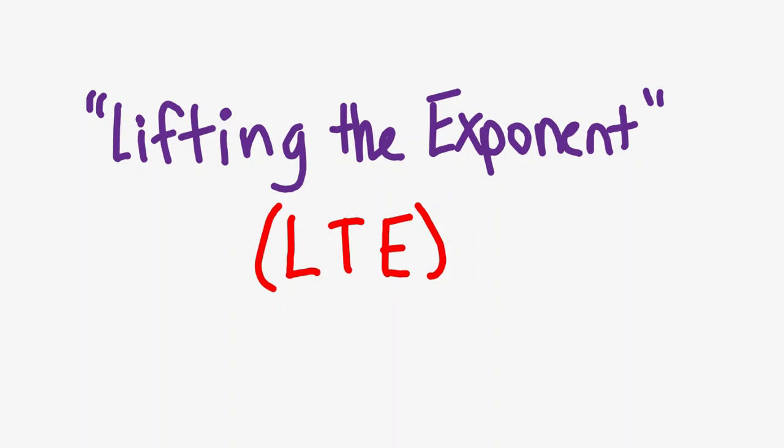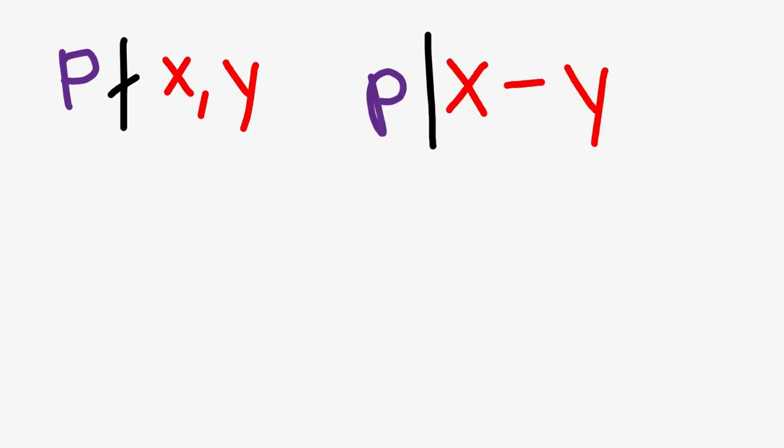At its basis, LTE is something like this. For any odd prime p, choose any two integers x and y, which are not multiples of p, but their difference is divisible by p. In addition, let n be any positive integer. Let the function v sub p of a describe the number of factors of p and a. Then we have the following.